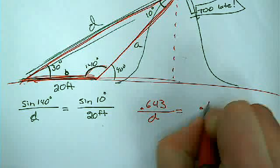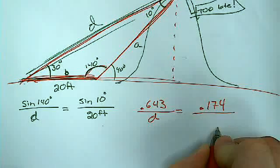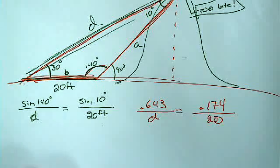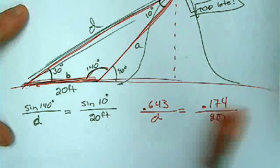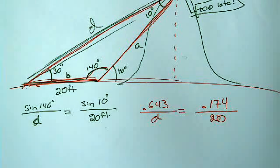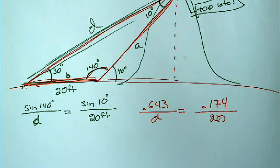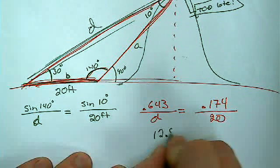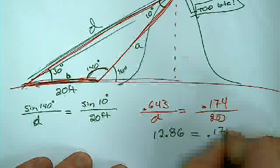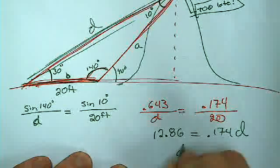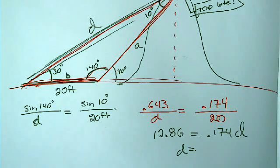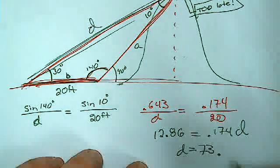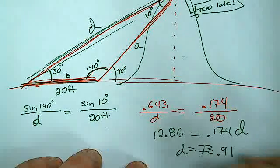Sine of 10 degrees is .174 over, and that's over 20. Cross multiply these guys. I can take 20 times .643. It puts me at 12.86 equals .174 times d. Divide it. And I get my d. 73.91 feet.